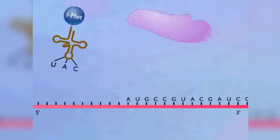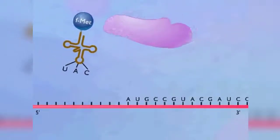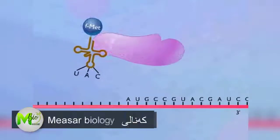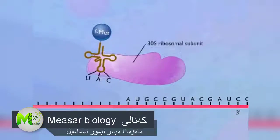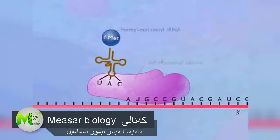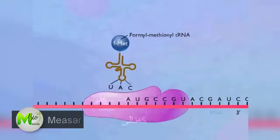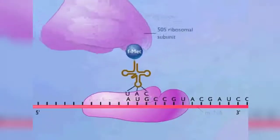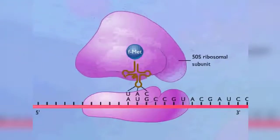In prokaryotic cells, translation is initiated by formation of an initiation complex consisting of the 30S ribosomal subunit, formyl methionyl tRNA, and messenger RNA. The 50S ribosomal subunit then joins the complex.